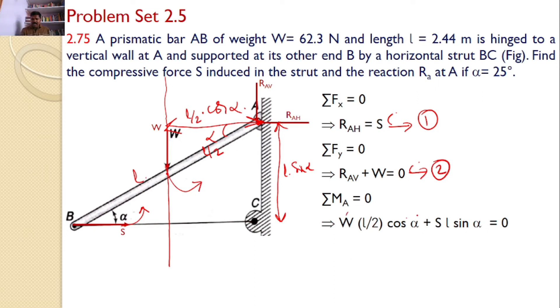W value is given. Alpha value is given. So I can substitute now S equals minus W into cos alpha divided by 2 into sin alpha. LL gets cancelled and you will get this equation. So W value is given as 62.3 by 2. Cos alpha by sin alpha is cot alpha and it is cot 25 because alpha value is given as 25.